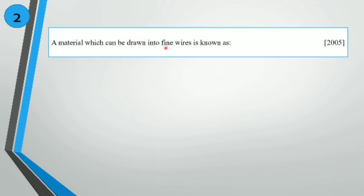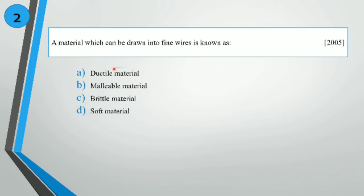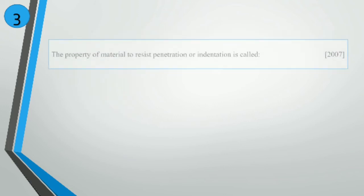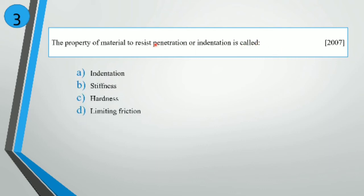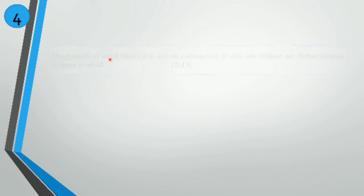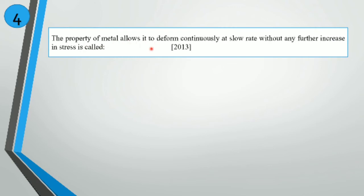A material which can be drawn into fine wires is called a ductile material. The property of a material to resist penetration or indentation is called hardness. The property of a metal that allows it to deform continuously at a slow rate without any further increase in stress — that is creep.